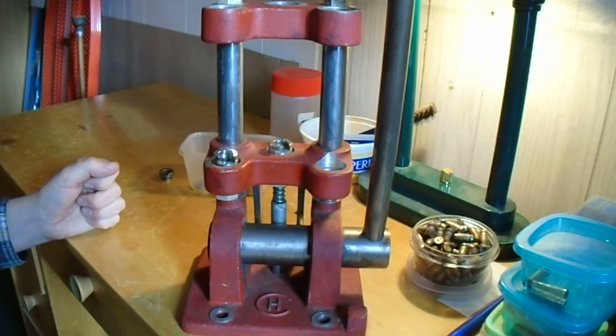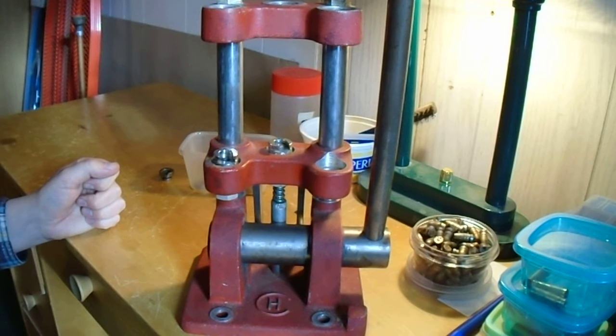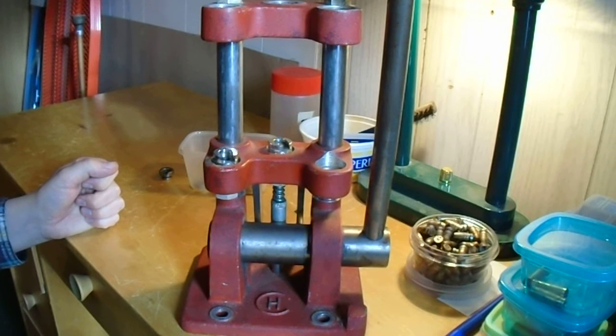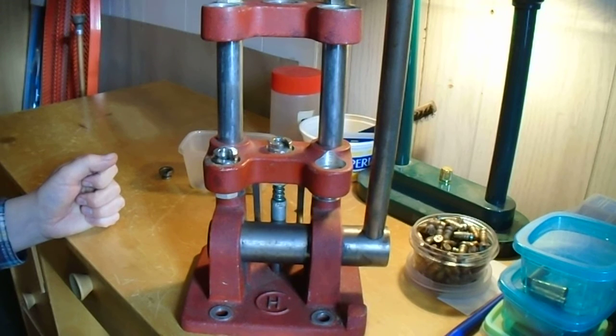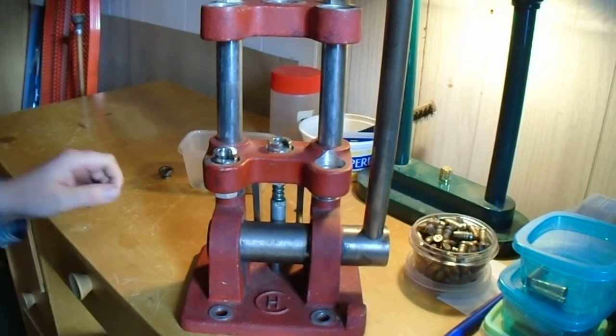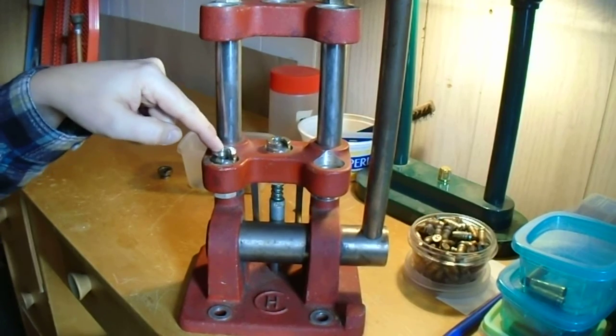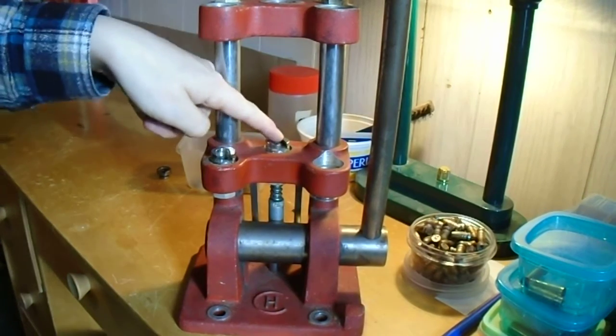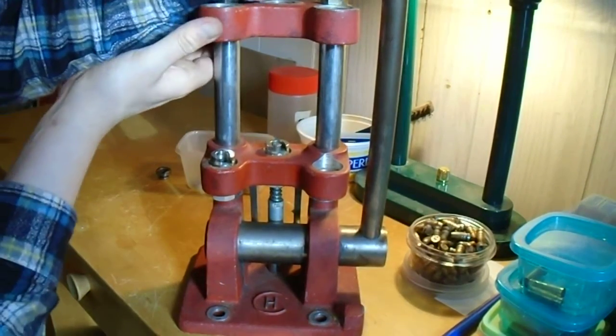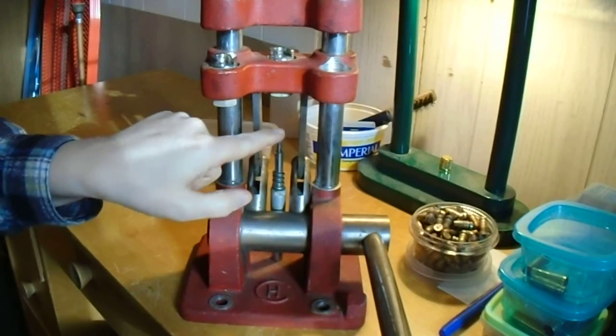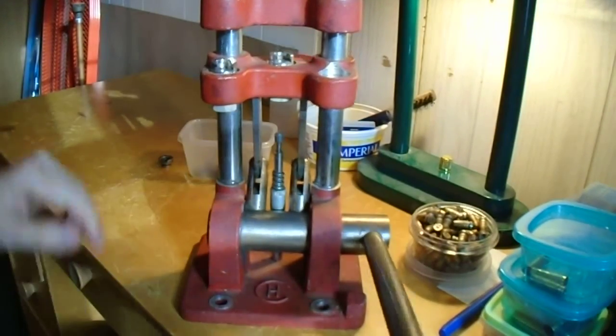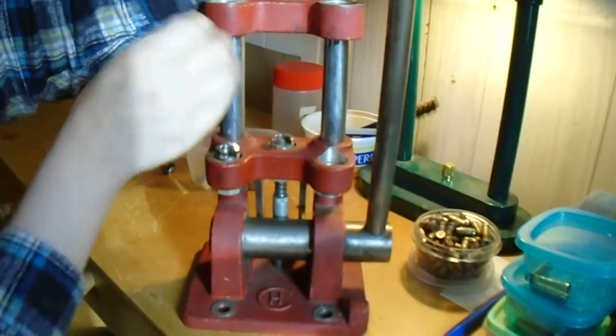And it's not really universal with newer shell holders for some weird reason. I don't know why it's that way, but I'll try to show you that. But you have your, this would be like your full length size station. Then there's a priming station here. You can see the priming stem, or whatever you want to call it, right there.